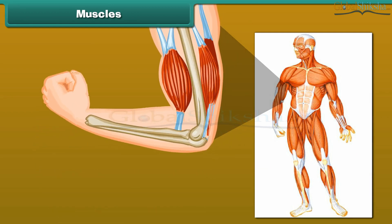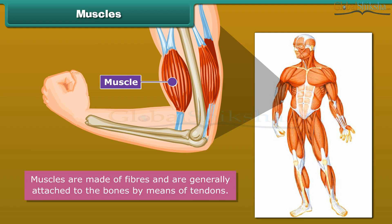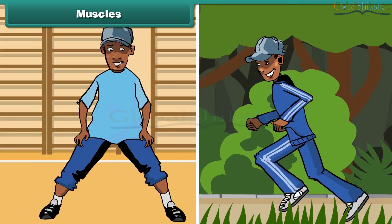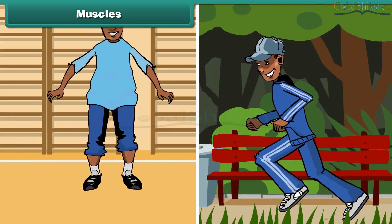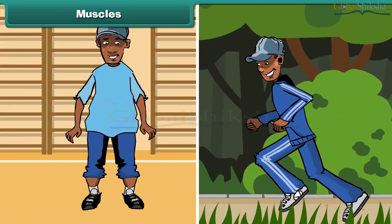Friends, make a tight fist and bend your arm at the elbow. Feel your upper arm — it feels harder. This is called the biceps. The biceps are muscles. There are about 600 muscles present in an adult human body. Muscles are made of fibers and are generally attached to the bones by means of tendons. Muscles, along with bones, help to give shape to the body and also help the different parts of the body to make movements.